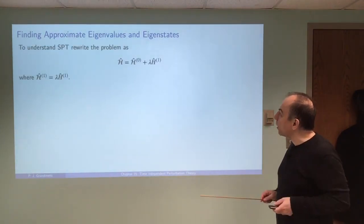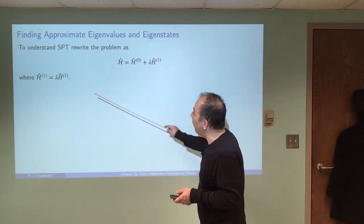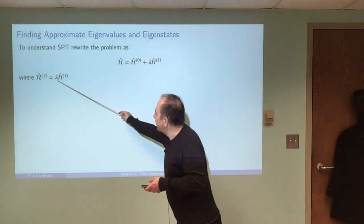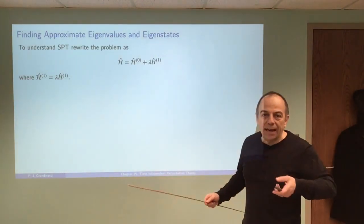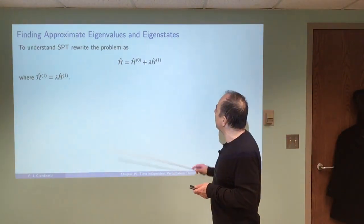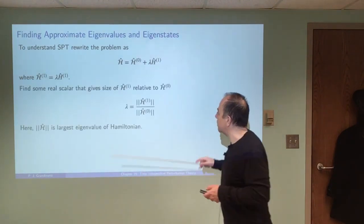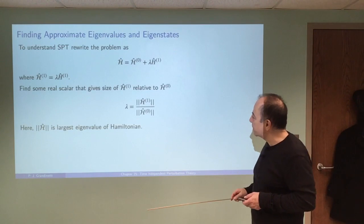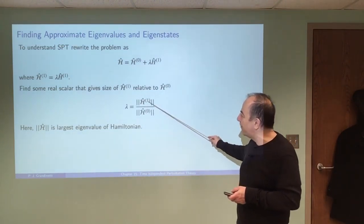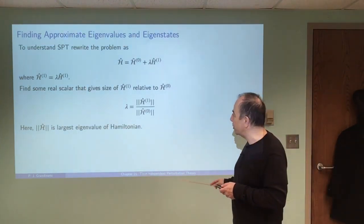We're going to rewrite our Hamiltonian by pulling out of H1, the perturbation, a variable we'll call lambda, which gives us the scale of the problem — it tells us how big H1 is relative to H-naught. Lambda is given by taking the largest eigenvalue of H1 and dividing it by the largest eigenvalue of H0.